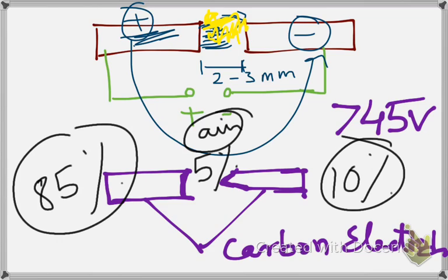The temperature of the positive electrode is around 3500 degrees centigrade, and the negative electrode is around 2500 degrees centigrade.